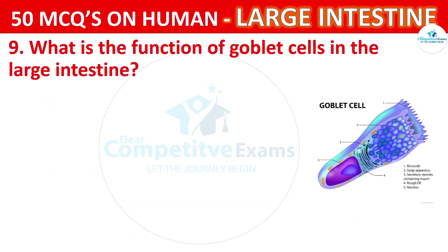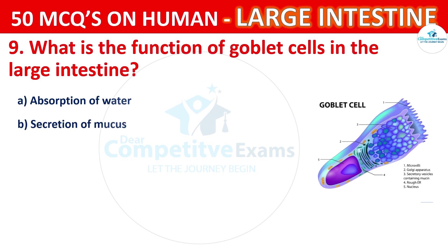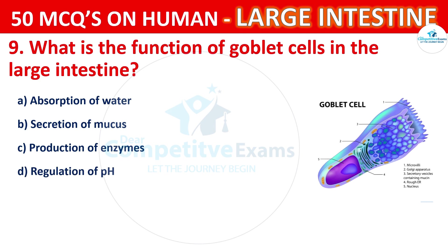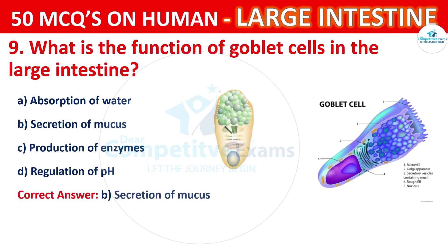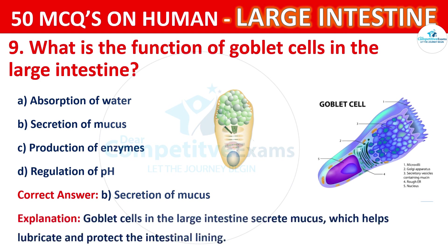What is the function of goblet cells in the large intestine? Your options are: Absorption of water, Secretion of mucus, Production of enzymes, or Regulation of pH. The correct answer is B, that is Secretion of mucus. Goblet cells in the large intestine secrete mucus which helps lubricate and protect the intestinal lining.